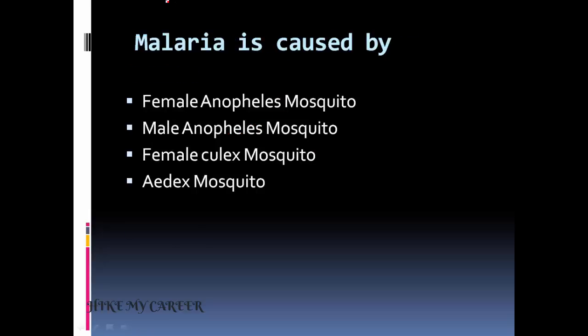Next question: malaria is caused by - option one: female anopheles mosquito, option two: male anopheles mosquito, option three: female culex mosquito, option four: aedes mosquito. Correct answer is option A, female anopheles mosquito.